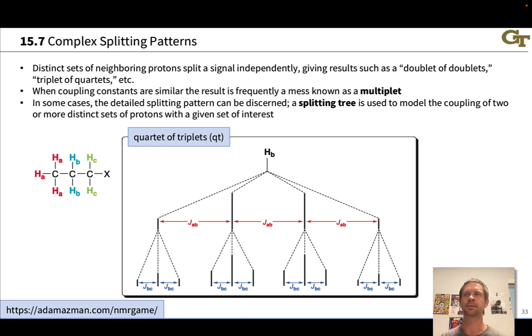The good news is, in some cases, we can systematically evaluate what the splitting pattern should look like, essentially by applying the n plus one rule to each distinct set of protons, and using a graphical tool called a splitting tree to get a sense of what the final multiplet will look like. This is a very common situation in actual organic molecules.